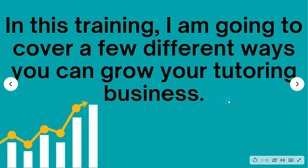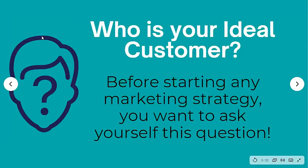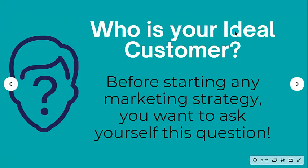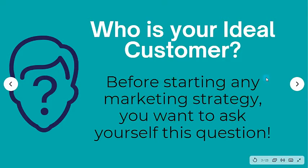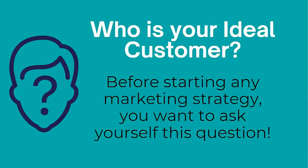In this training I'm going to cover a few different ways that you can grow your tutoring business. The very first thing you want to consider is who your ideal customer is, because before starting any sort of marketing strategy or lead campaign — before you go into the marketplace to attract customers — you want to define who your ideal customer is. There's a strategy called the spray and pray method, where people just put their marketing everywhere and pray they get a customer. But real marketers figure out who their customer is, what their customer avatar looks like. Some companies will actually put a name to it — like, hey, this is Susan. She's a parent, a soccer mom, has three kids, she's married.